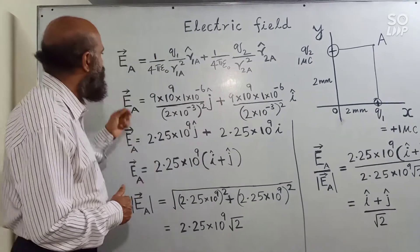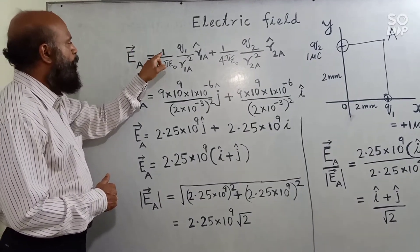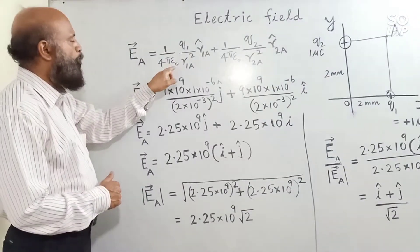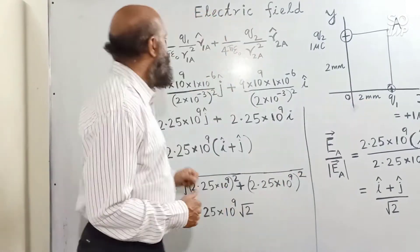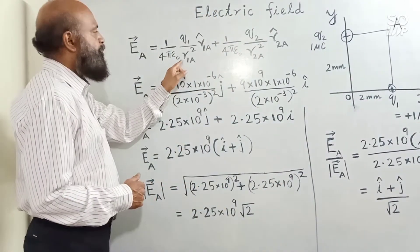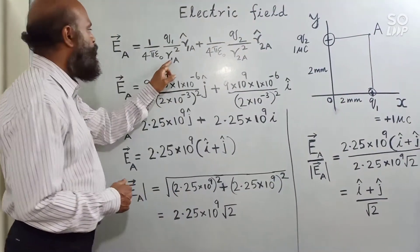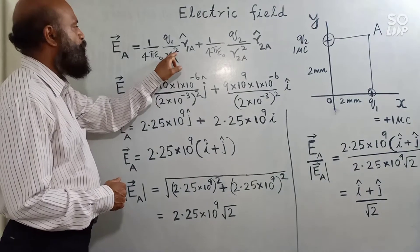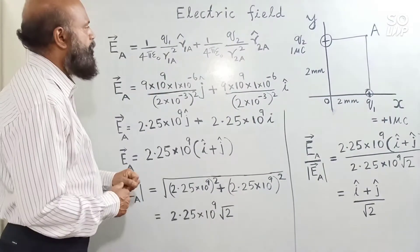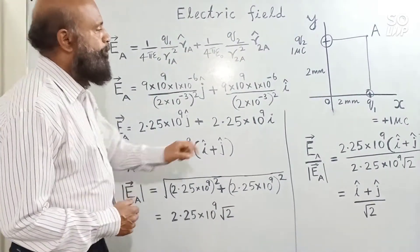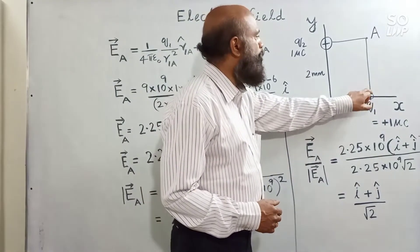Using the superposition principle, the electric field at point A is (1/4πε₀) × q1/r1A² × r̂1A, where r̂1A is the unit vector from the first charge to the point. This field is acting along the positive y-axis.